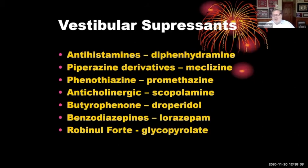The vestibular suppressants include meclizine, which we use most. But all of these can cause orthostasis and impair thinking — they're just not the greatest drugs. I have used robinul-4, which is glycopyrrolate, in quite a lot of patients over the years and it seems to have the least side effects and works very well. So it's worth a try.